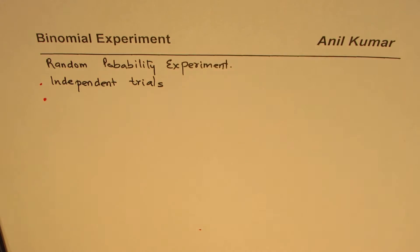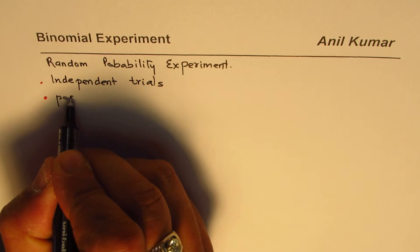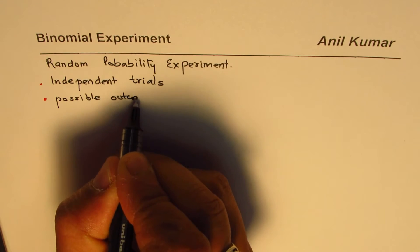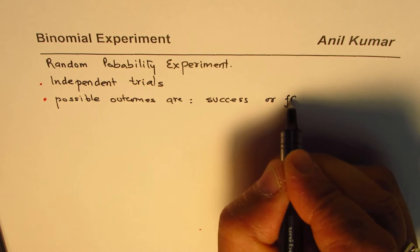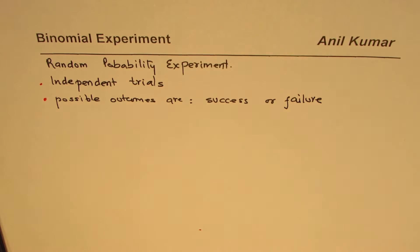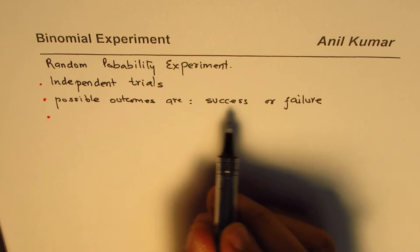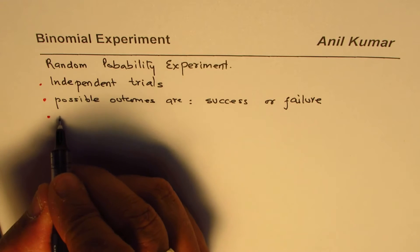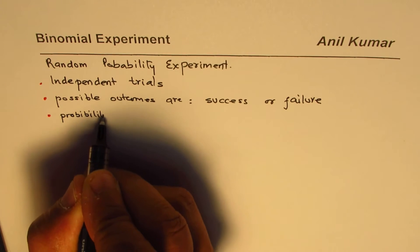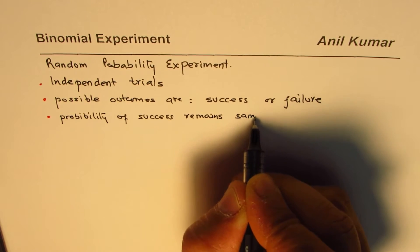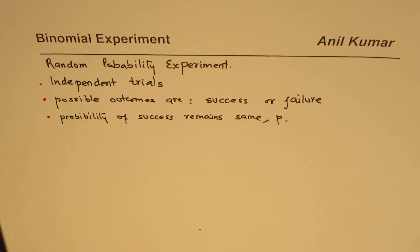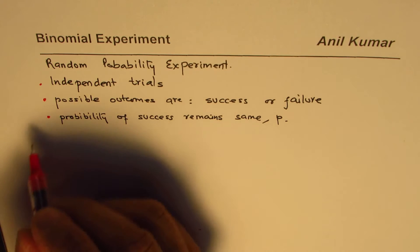The possible outcomes are only two, which could be either success or failure. Another important thing here is that the probability of success should remain the same throughout. So possible outcomes are only two, and the probability of success remains the same — we normally denote this with lowercase letter P.